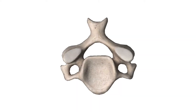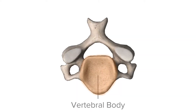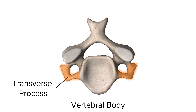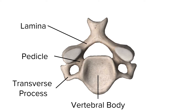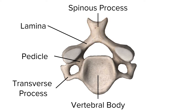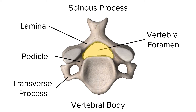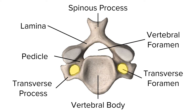We need a basic understanding of the anatomy of a typical C-spine. Here is the vertebral body, the transverse processes, the pedicles, the lamina, the spinous process, and then we have the vertebral foramen and the two transverse foramen.